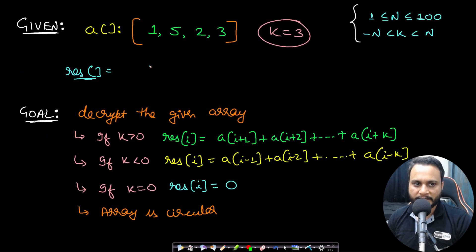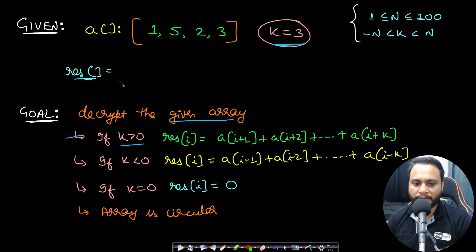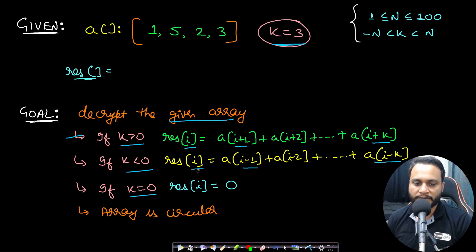Let's look at an example for better understanding. Our given array is [1, 5, 2, 3] and k equals 3. Our goal is to decrypt the array such that if k is greater than 0, the resultant value at index i is the sum of all values from i+1 to i+k. If k is less than 0, the result at i is the sum from index i-1 to i-k. And if k is 0, all result elements equal 0. The array is circular.